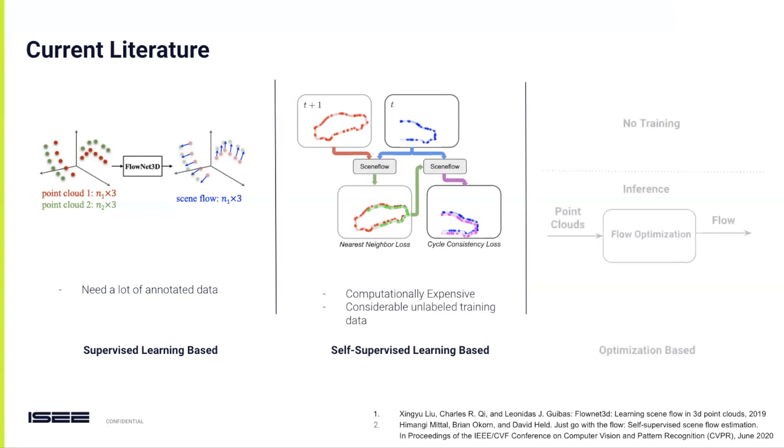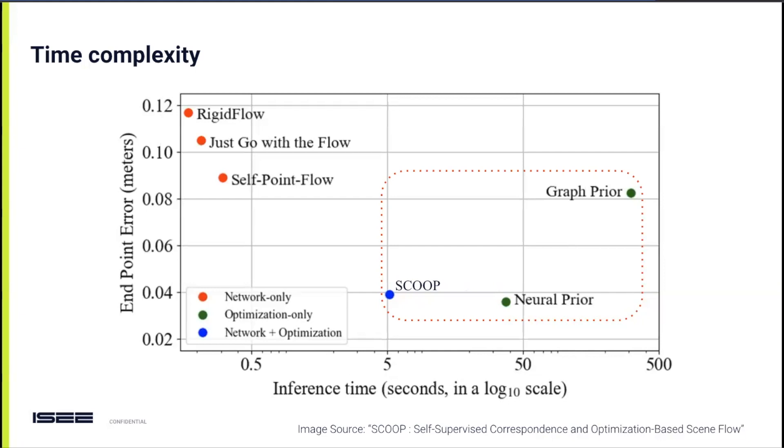On the other hand, optimization-based methods are non-learning-based approaches that don't rely on training data and perform flow optimization during inference. They are highly accurate but suffer from long inference times. For instance, this graph from a recent scene flow paper illustrates how optimization-based methods lag behind in speed compared to learning-based approaches.